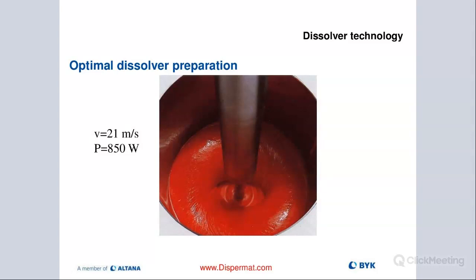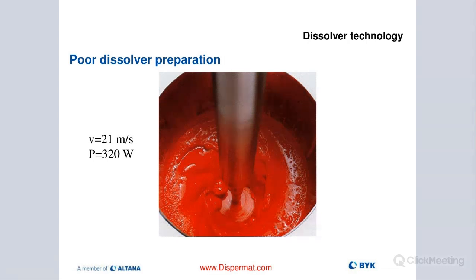In this case, the viscosity is different — we're only putting in 320 watts of energy at the same tip speed. That means our viscosity is probably a little bit too low, and we're not able to properly disperse this material. What could help is changing the formulation to bump up the viscosity somewhat, increasing the tip speed, or changing the blade diameter. We would call this a poor dissolver print.